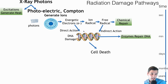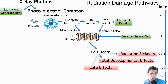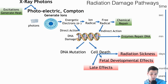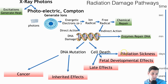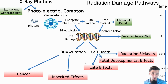That damage can lead to either cell death — in which case you could have radiation sickness, fetal effects, or late effects — or DNA mutation, which can lead to cancer or inherited effects if that mutation occurs in germline cells. Since we're not talking about germline cells in this video, we're not talking about cancer induction. We're primarily interested in the path where cell death is the primary result of the radiation damage.